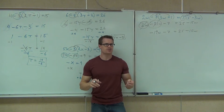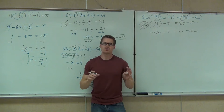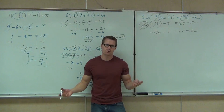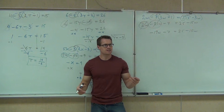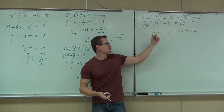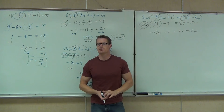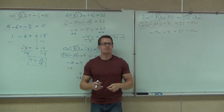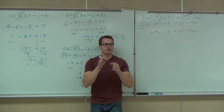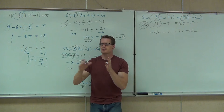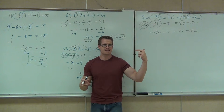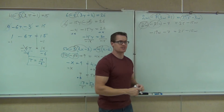You still want to take the smaller variable — that ensures your variable stays positive so you don't have to divide by a negative. Out of negative 19w and minus 15w, which is technically smaller? Negative 19, because on the number line it's further to the left. So we're going to get rid of the negative 19 by addition.